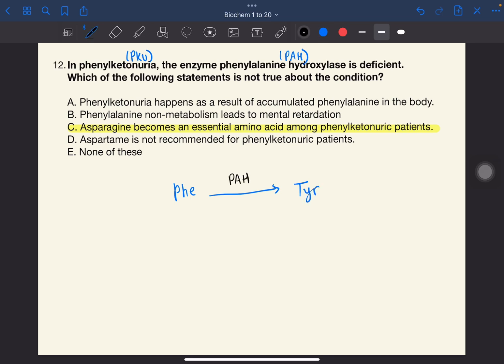Since this is deficient in people with PKU, it's difficult to produce tyrosine. Phenylalanine doesn't break down, so it accumulates in blood and brain, which ultimately causes mental retardation due to brain damage. This is correct.